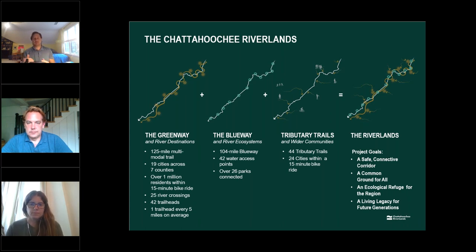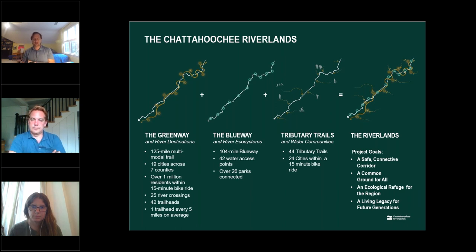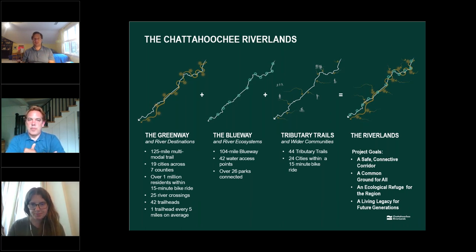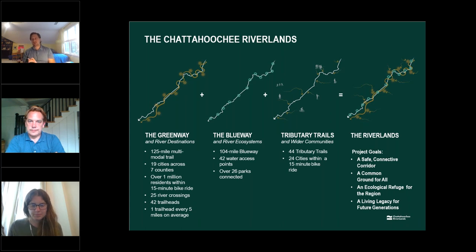Some tributary trails follow actual river tributaries and some follow other types of linear corridors like roads or existing trail corridors. There are a lot of cities we nickname trail towns or river towns along that area, where local governments have started to build up recreation as part of the core focus of their local economies and development strategies. These three elements together — the greenway, the blueway, and the tributary network — are what we call the Riverlands, the trail network that traces along the Chattahoochee River.